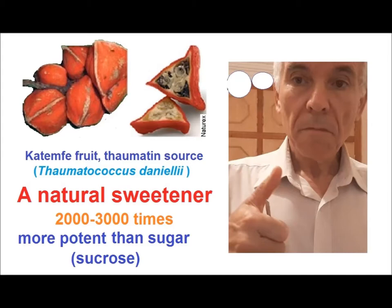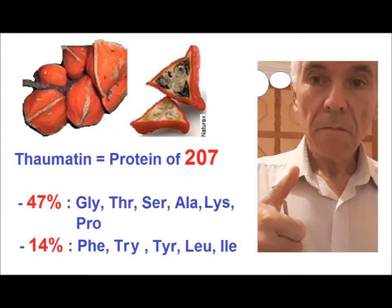Here we give the example of a natural sweetener called thaumatin. Thaumatin can be obtained from the plant Thaumatococcus daniellii, called in Africa katemfe. This natural sweetener is a protein 2,000 to 3,000 times more potent than sugar. Thaumatin is a protein of 207 amino acids, where about 50% of amino acids are represented by the six sweet amino acids: glycine, threonine, serine, alanine, lysine, and proline. And only 14% of amino acids represent phenylalanine, tryptophan, tyrosine, leucine, and isoleucine — the bitter amino acids.